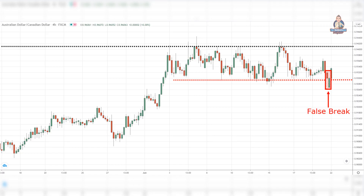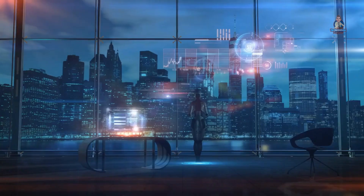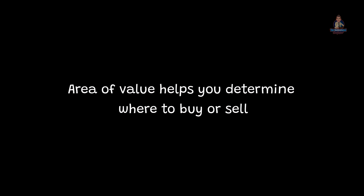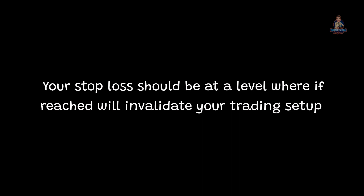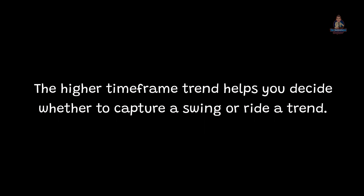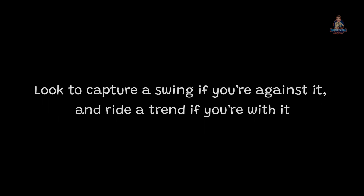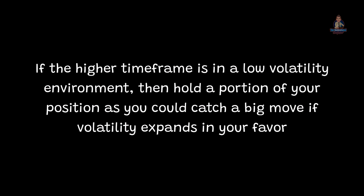As you can see, there's a false break setup on the 4-hour timeframe, after which the price moved in your favor. So here's what you've learned: Market structure tells you what to do. Area of value helps you determine where to buy or sell. Entry trigger tells you when exactly to buy or sell using a specific price pattern. Your stop loss should be at a level where, if reached, it will invalidate your trading setup. The higher timeframe trend helps you decide whether to capture a swing or ride a trend — look to capture a swing if you're against it, and ride a trend if you're with it. If the higher timeframe is in a low volatility environment, hold a portion of your position as you could catch a big move if volatility expands in your favor.